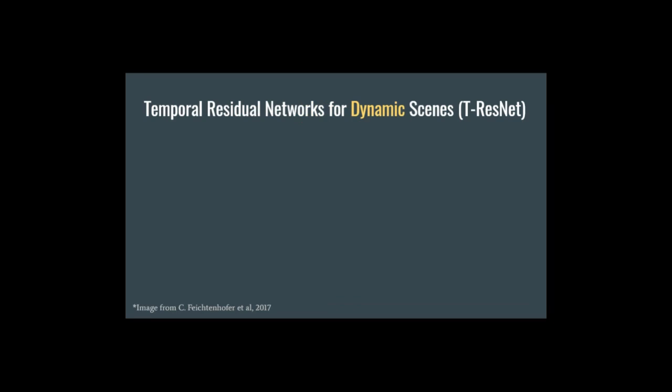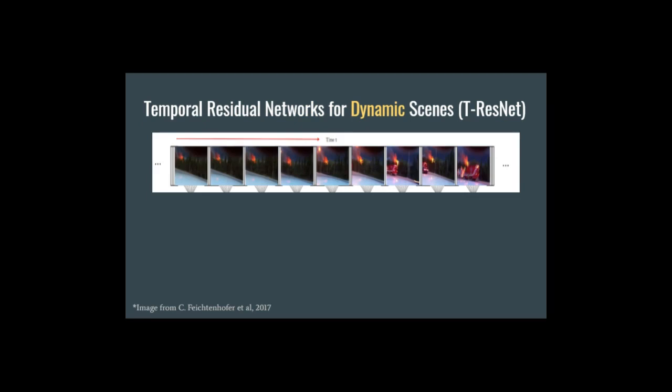For dynamic scenes, the temporal aspect of the scenes must be considered. Therefore, a temporal residual network is proposed. A stream of images that capture temporal effects on the scene, including camera motion that we have to account for as it adds extra noise, is passed as input to the network. This network has to handle distortion in the form of noise or camera motion, which is a challenge specific to dynamic scenes. Finally, the network provides the final classification in the form of a scene label that describes the input video.